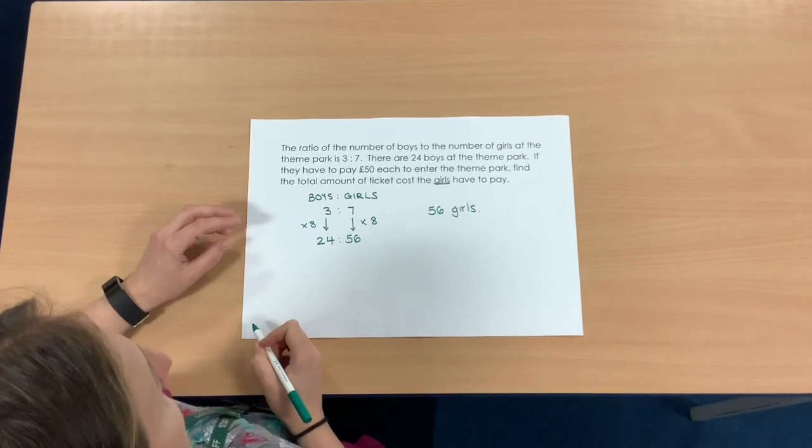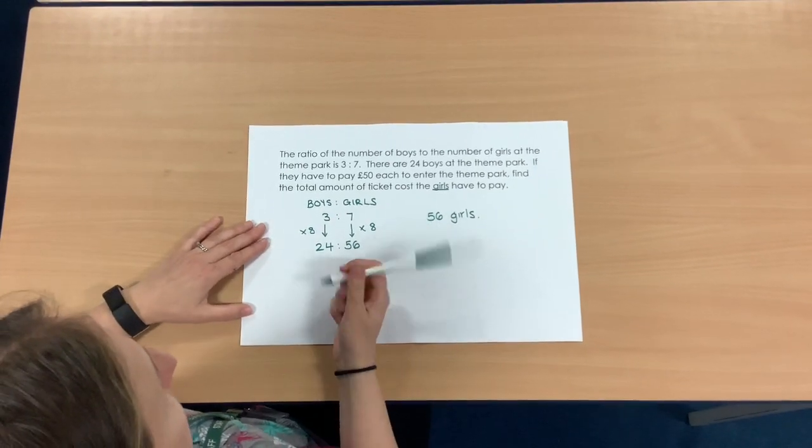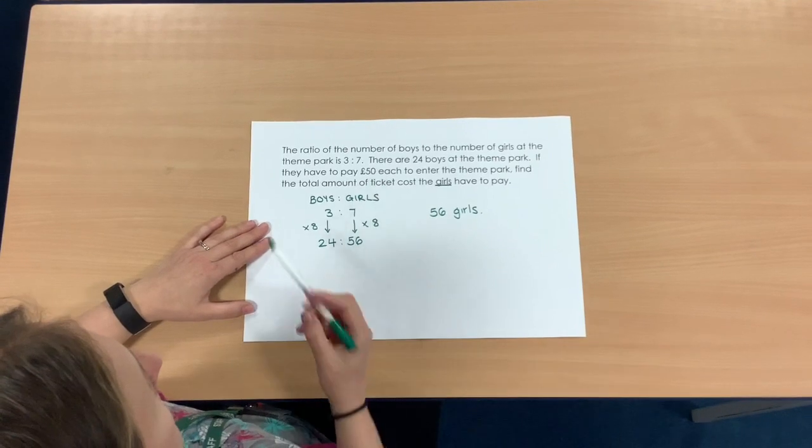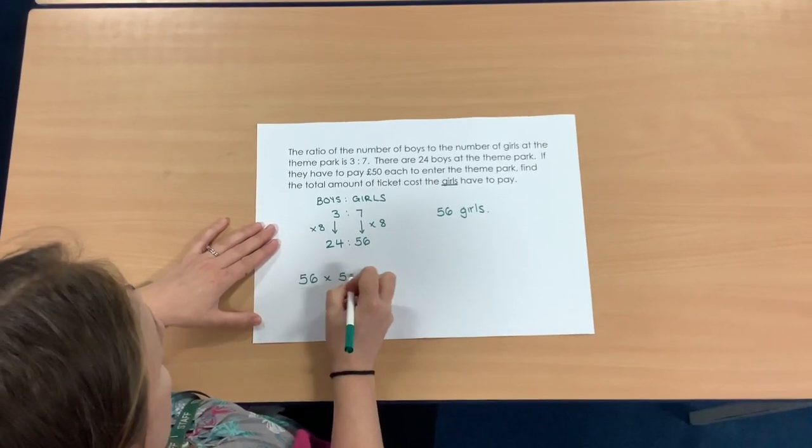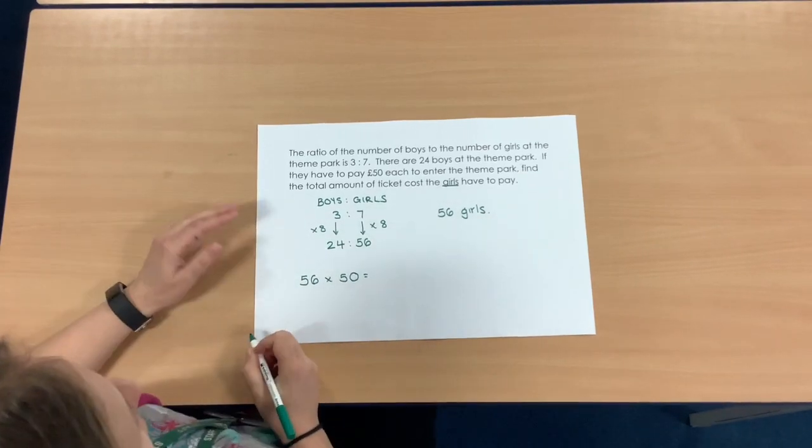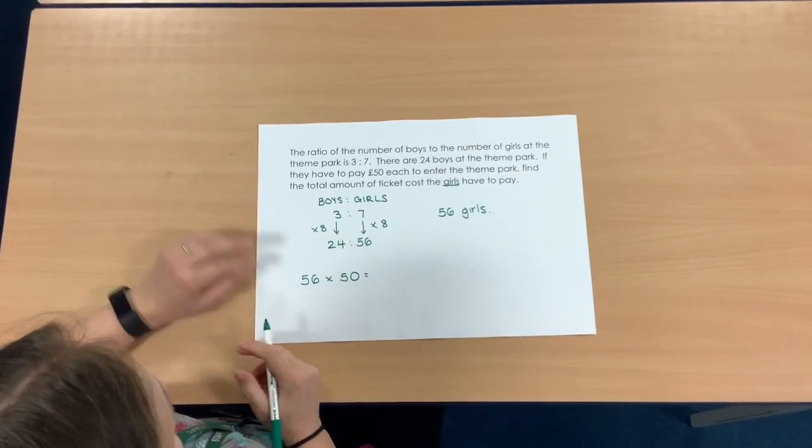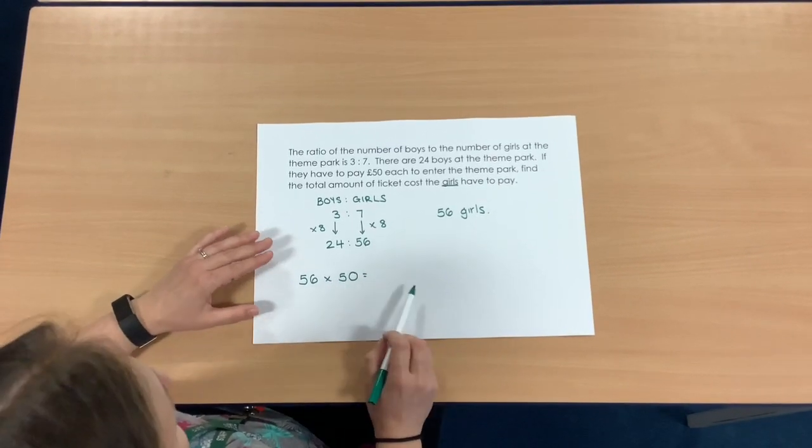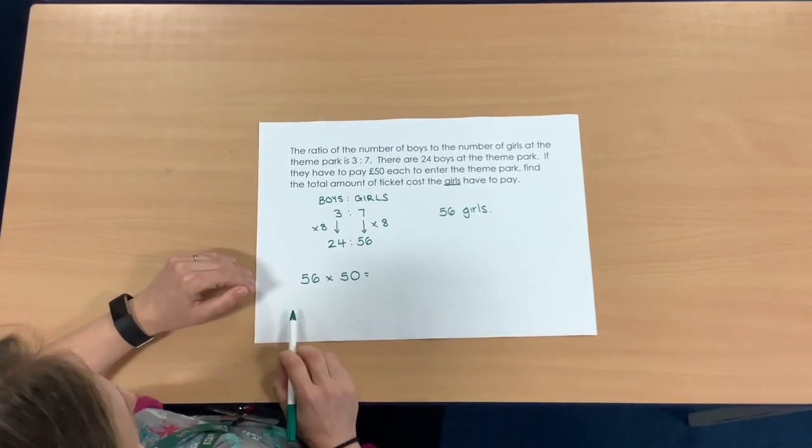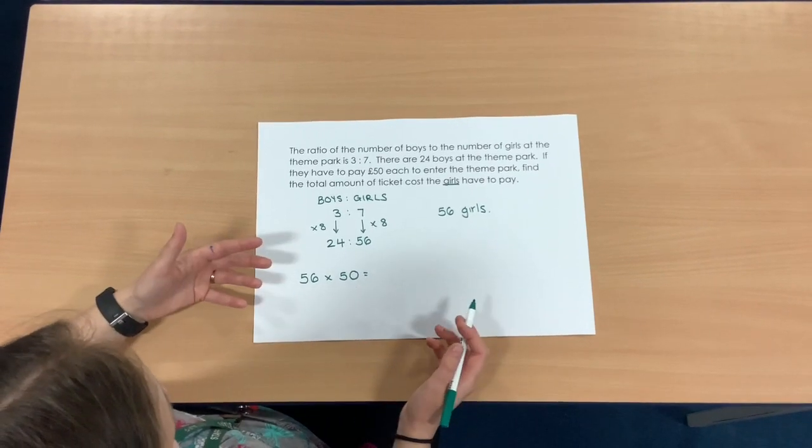Now I need to work out how much they have to pay. So I have to do a multiplication here of 56 multiplied by 50. There are different ways to do this. You could of course do a written method if you want to. My personal preference for multiplying by 50 is to multiply by 100 and then half it. It doesn't matter how you do it.